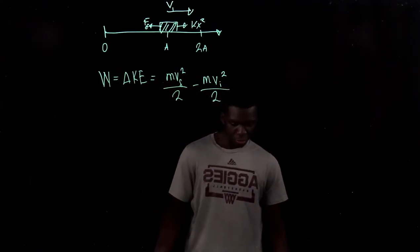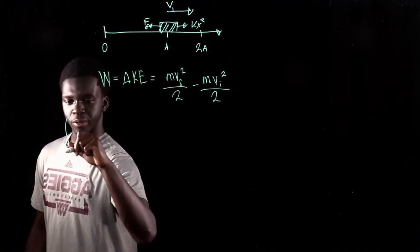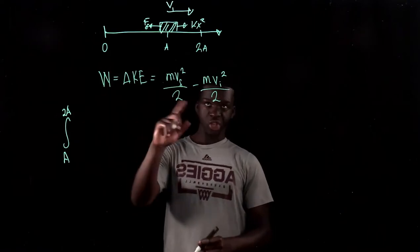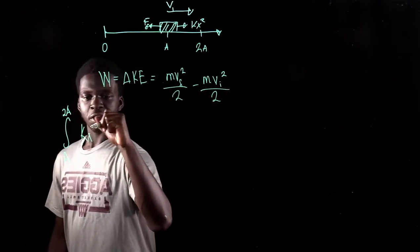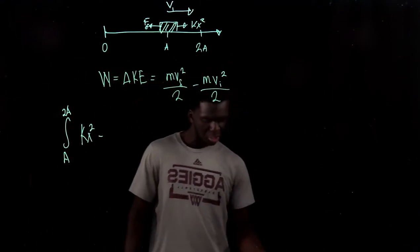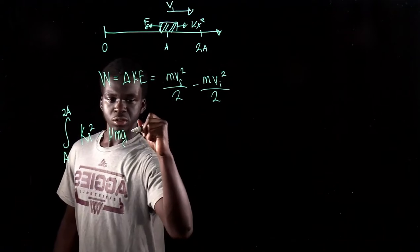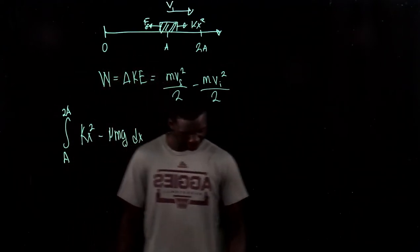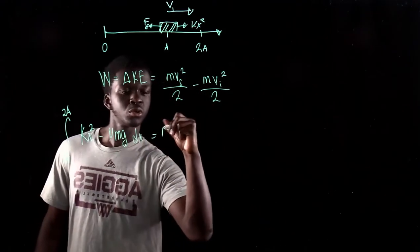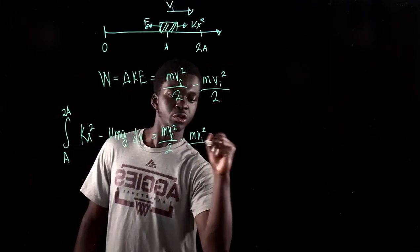Let's start by finding the work from distance a to 2a. We're going to use the forces in the x direction since that's the direction of motion. The integral is: positive kx² minus μmg dx, since the normal force n equals mg. After setting that equal to mvf²/2 minus mv_initial²/2, we evaluate the integral.